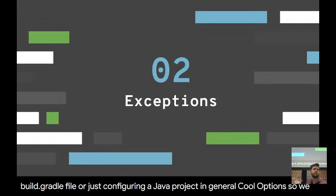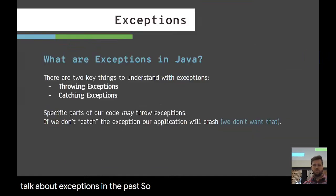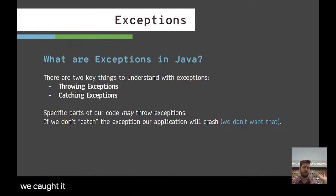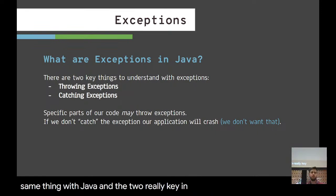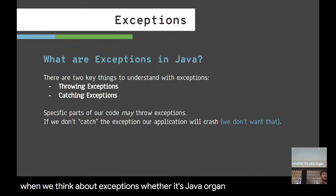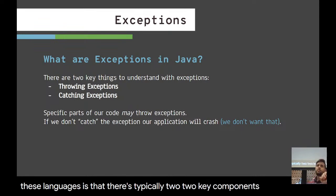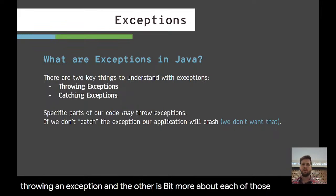Exceptions. So we talked about exceptions in the past — we had an entire section of the JavaScript portion where we wrote exceptions, threw exceptions, caught exceptions. We're going to have a bit of the same thing with Java. The two really key important things to keep in mind when thinking about exceptions, whether in Java, JavaScript, or any language, is that there are typically two key components: throwing an exception and catching the exception.